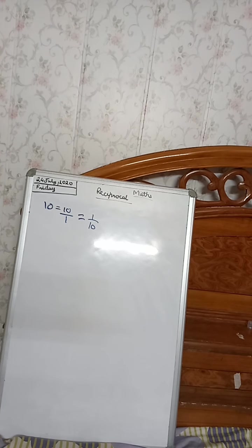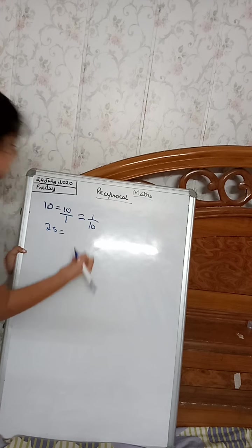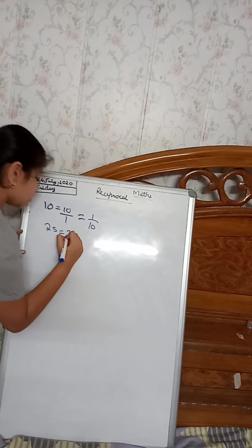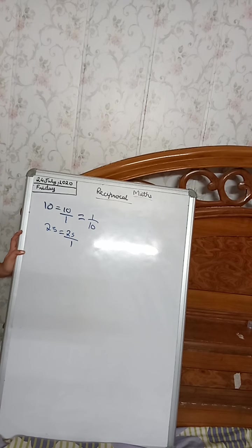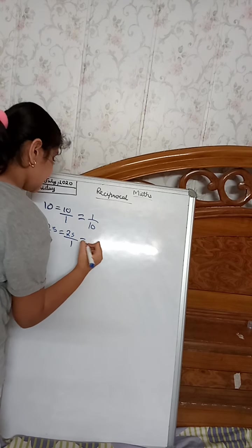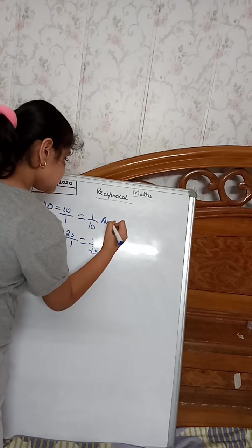Now we will have another example. I will have 25. First I will convert it into a fraction. Write 1 in the denominator. And after it, I will just switch them. These are our answers.